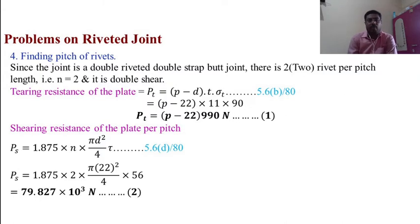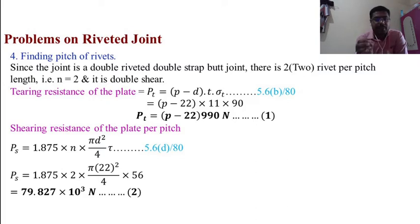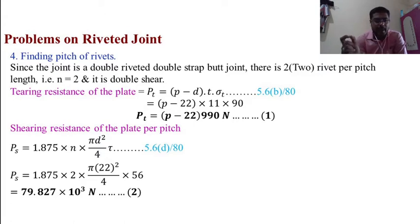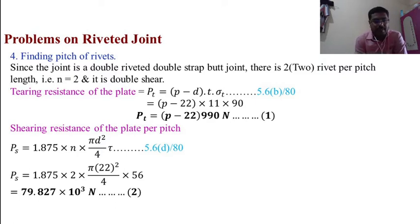Shearing resistance of the plate per pitch: Ps = 1.875 × n × (π/4) × d² × τ — equation 5.6D, page 80 of the data handbook. Ps = 1.875 × 2 × (π/4) × 22² × 56 = 79.827 × 10³ N. This is equation 2.